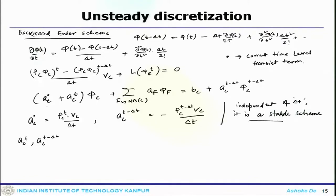The Backward Euler scheme is not ideal, however, as it is low order and solutions obtained with this scheme are of lower order of accuracy unless a very small time step delta t is used. Using very small time steps is a restrictive condition, because marching at a slower pace compared to using large time steps reduces computational efficiency, and results with large time steps would be very erroneous.